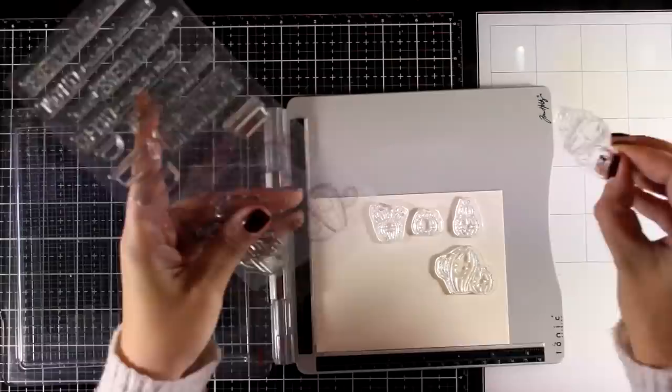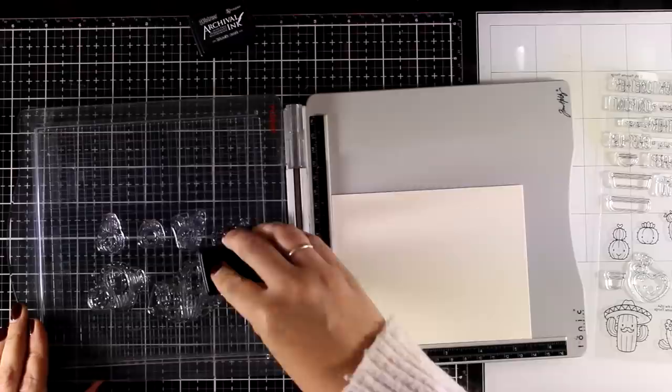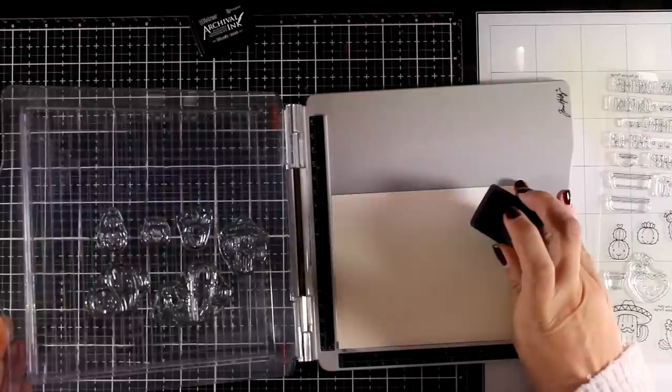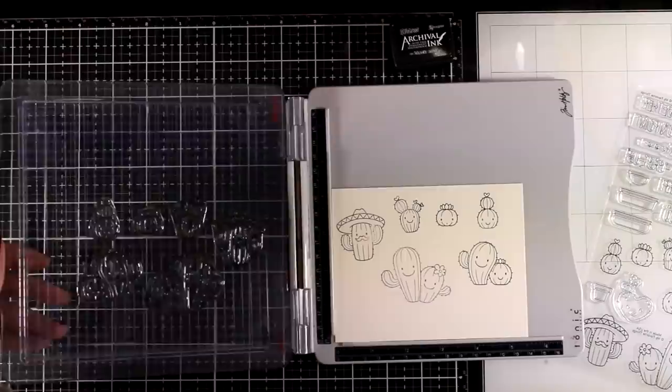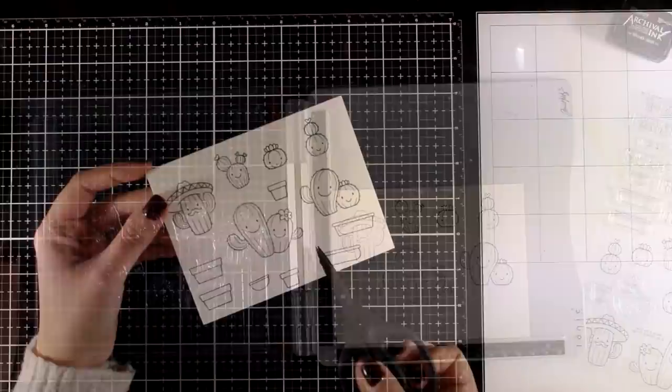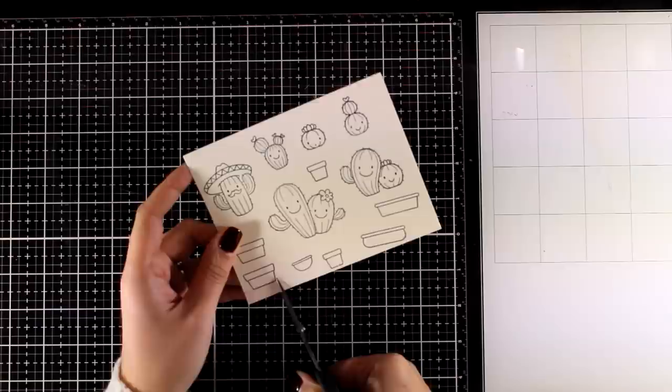So here I'm picking all the different cactus designs. I'm using black archival ink which is permanent to stamp them and this will ensure that no matter what I do on top of these images they are not going to smudge or smear. And after stamping them a couple of times with my stamping platform to get a good impression I'm going to use my scissors and cut out everything. And you can see here I even stamped the different designs of pots that come in the stamp set.